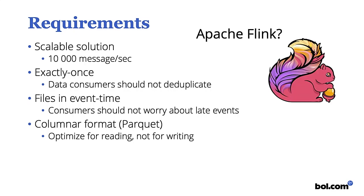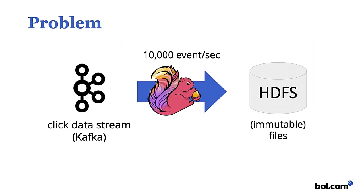My first candidate was Apache Flink. Why? Because first, I already used Flink, and it promises to deliver on every aspect. It's scalable by nature because it's a distributed processing system, it gives you exactly-once guarantees, it has semantics for event time windowing, and it has an output format to Parquet. So I figured I could just use Flink — it should work out of the box.